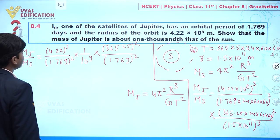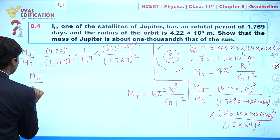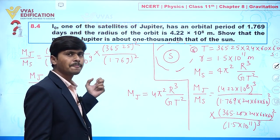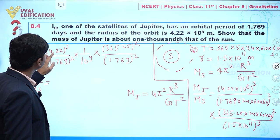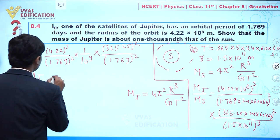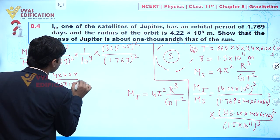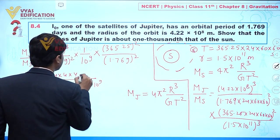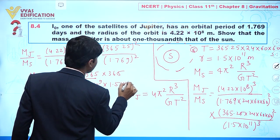Taking approximations: M_J/M_S equals approximately (4)³/(1.5)³ multiplied by (365)²/(1.769)² multiplied by 1/10⁹, which simplifies as we approximate 4³ = 64, and 1.5³ = approximately 1.5 cubed, combined with the 365 squared terms.